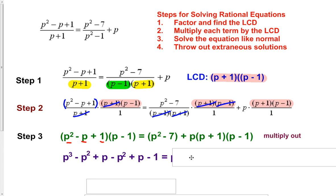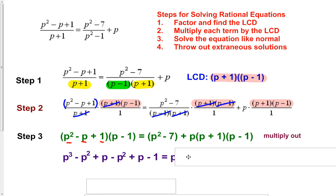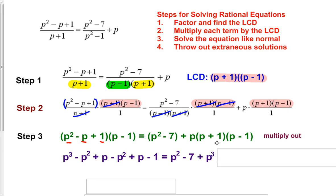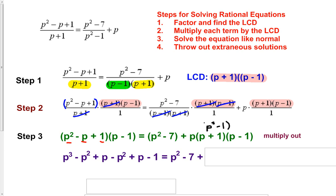On the right side, we simply have p squared minus 7 because there's no distribution required. Then p times p plus 1 times p minus 1: since p plus 1 times p minus 1 is a difference of squares, it foils to p squared minus 1. Then multiplying by p gives p cubed minus p. Now we see if anything cancels out on both sides. We have p cubed on both sides — that cancels out, simplifying things nicely.